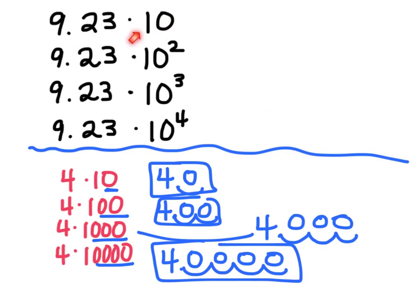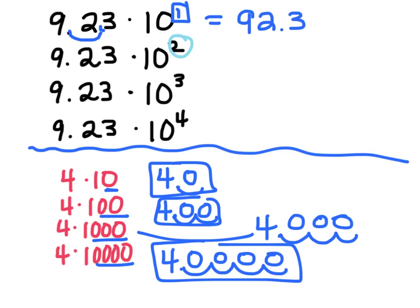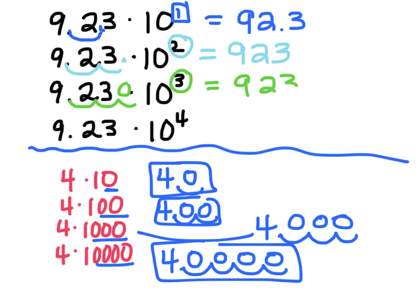Now, up here, I'm still multiplying by powers of 10. So this first one has one zero — it's 10 to the first. So you can actually look at the exponent and move the decimal over one spot. So this actually equals 92.3. The second one is to the second power, so you can move the decimal over two spots to the right and you get 923. The next one is to the third power. You can move the decimal over three spots. I'm going to have to add a zero there, and I get 9,230.